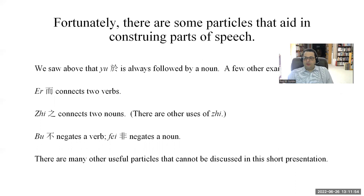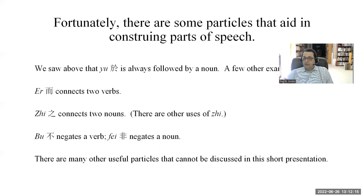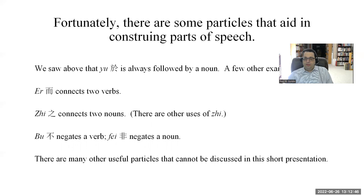Fortunately, there are some particles that aid in construing parts of speech; otherwise, sentences might be either highly ambiguous or possibly unintelligible. The language works because there are particles that immediately signal certain parts of speech, and from there you can parse the rest of the sentence. We saw that 'zhi' is always followed by a noun. A few other examples: 'er' connects two verbs; 'zhi' connects to nouns; 'bu' negates a verb; 'fei' negates a noun. These representative particles give you a sense of how all is not lost — we can usually tell with reasonable confidence what part of speech each word is playing.